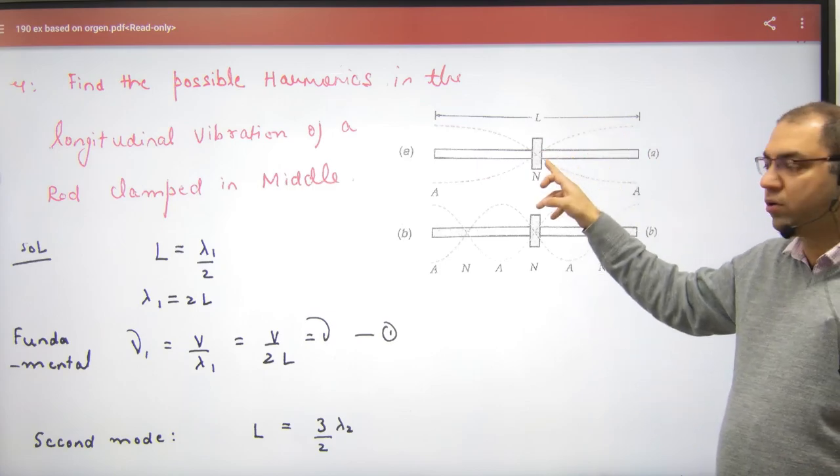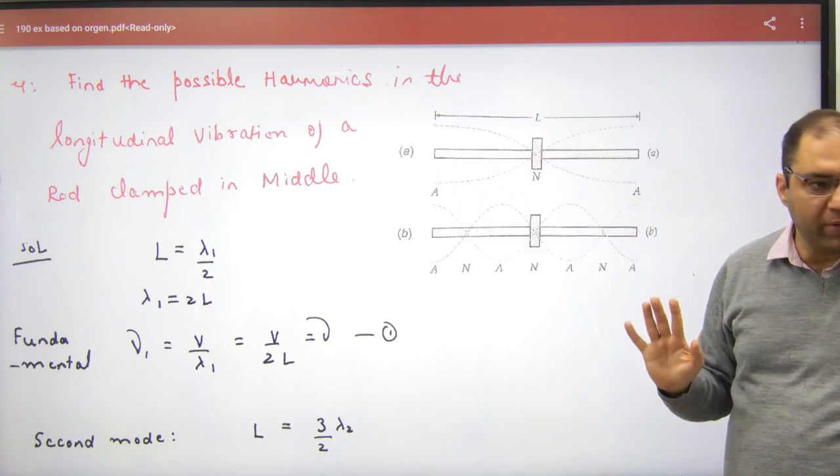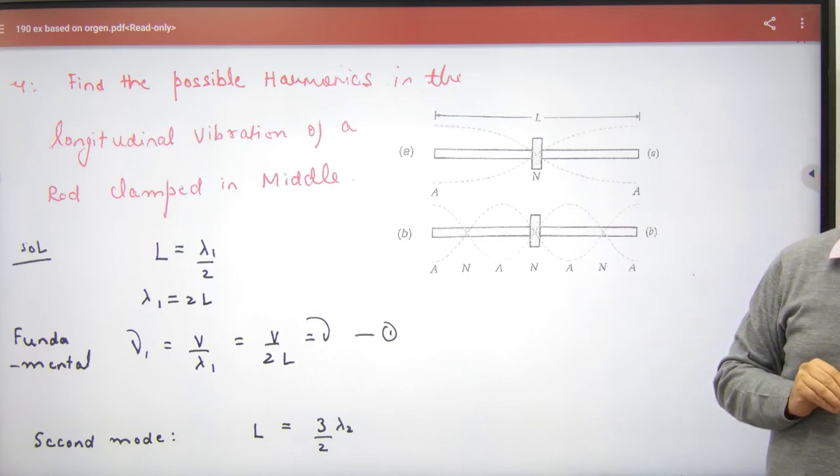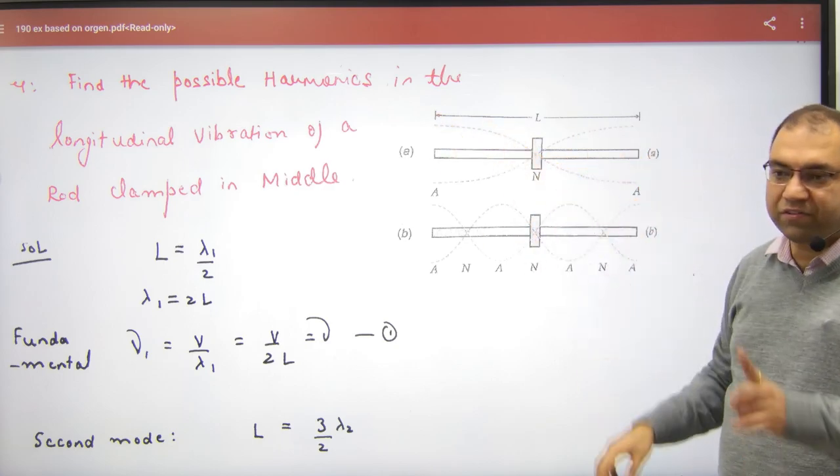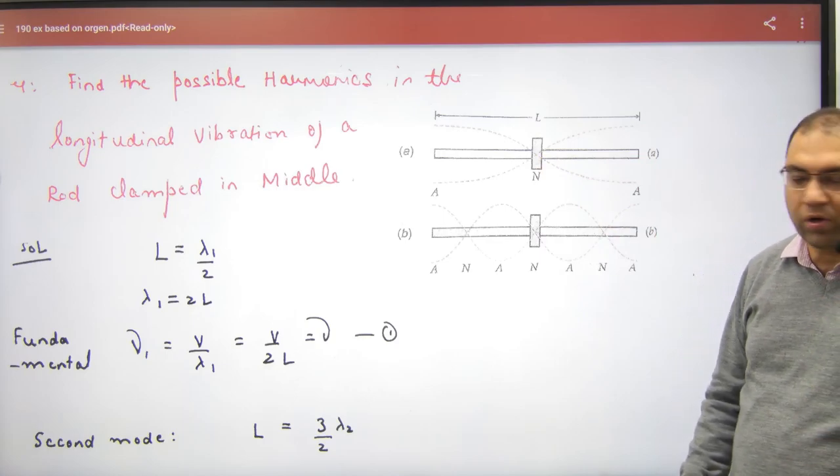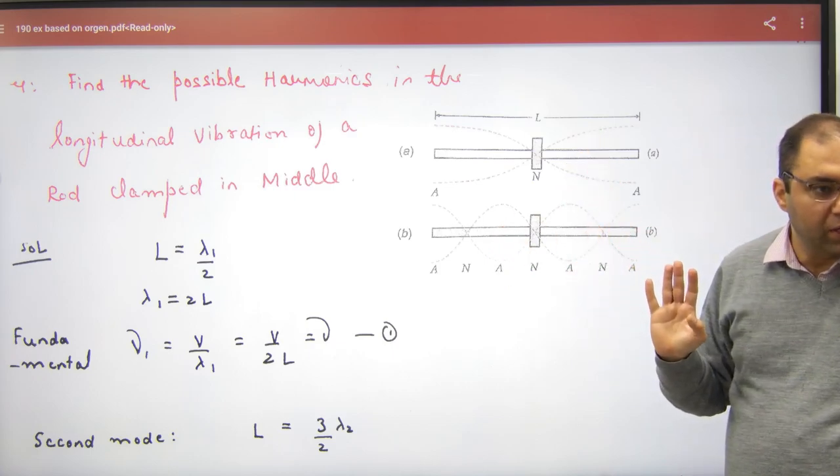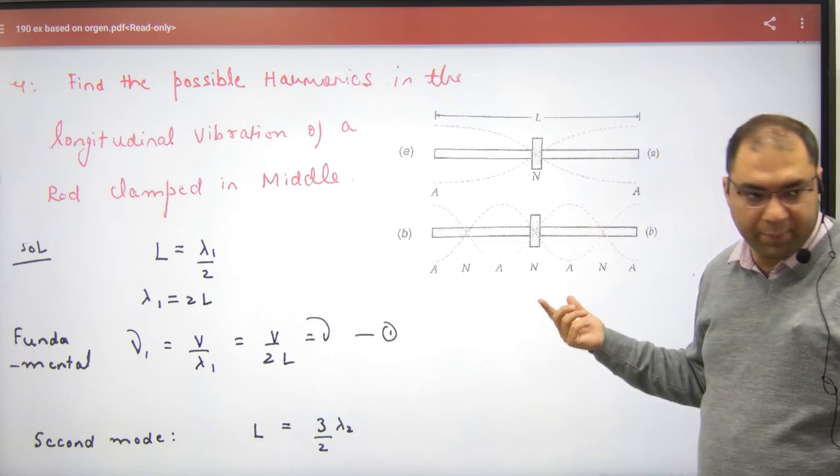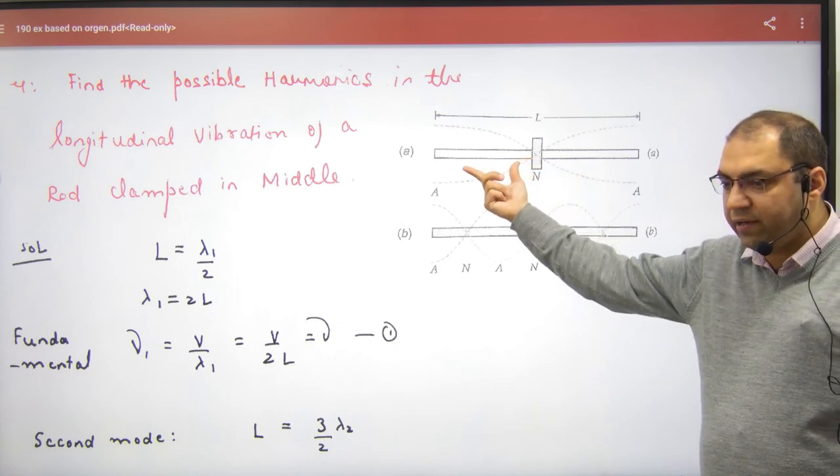Clamped fixed end is node, open end is anti-node. So first fundamental case, this is first mode of vibration. Second mode of vibration, one loop extra. Third mode of vibration, two loops here, two loops here.